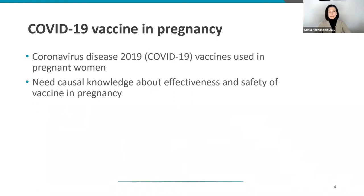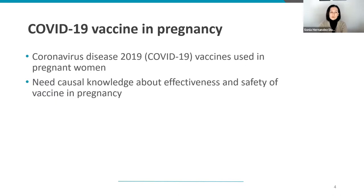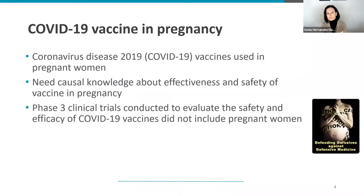The COVID-19 vaccine in pregnancy: the vaccine has been used in pregnant women and is going to be used sometimes because it is recommended, but other times because women learn that they are pregnant after they receive the vaccine — by accident, if you wish. Because of that, we need to have evidence on the effectiveness and safety of this vaccine in pregnancy. However, pre-marketing trials typically do not include pregnant women, and even the phase three clinical trials conducted to evaluate the COVID-19 vaccine did not include pregnant women.